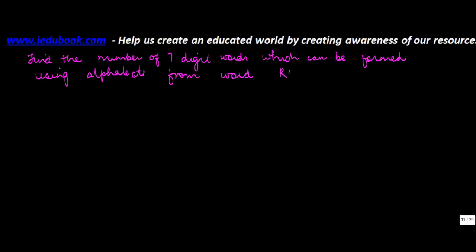Find the number of seven-digit words which can be formed using alphabets from the word RAINBOW, such that all vowels are together, and two, where they are separate.